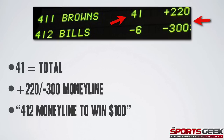On the right-hand side you'll see plus 220 and negative 300 — these are the money line odds. So in this example, if you wanted to place a money line bet you'd say '412 money line to win $100.' If you don't say 'money line,' they'll always just assume you're betting the point spread, so make sure you specify if you want to bet the money line.